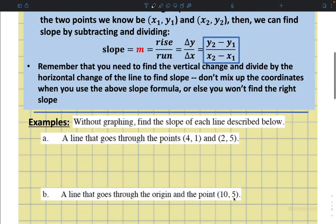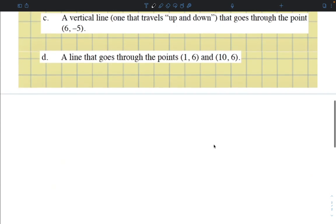So here are some examples. Without graphing, find the slope of each line described below. So our first one is a line that goes through the points (4, 1) and (2, 5). So let's do this down here. We have our points (4, 1) and (2, 5).